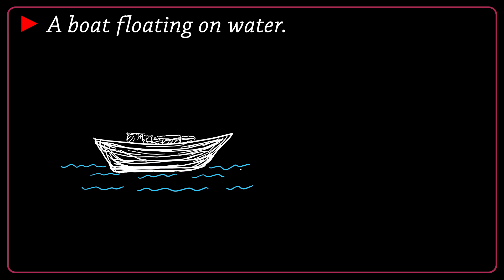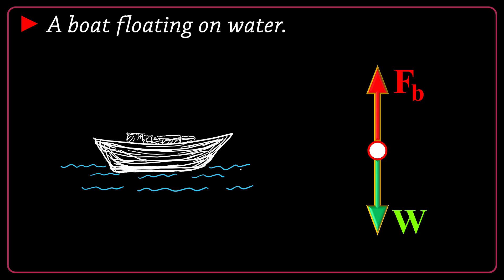Next case: a boat floating on water. The boat is at rest, so the total net force is again zero. We have a downward force W and a buoyancy force Fb upward. The Fb must cancel W to hold the boat on the water surface.